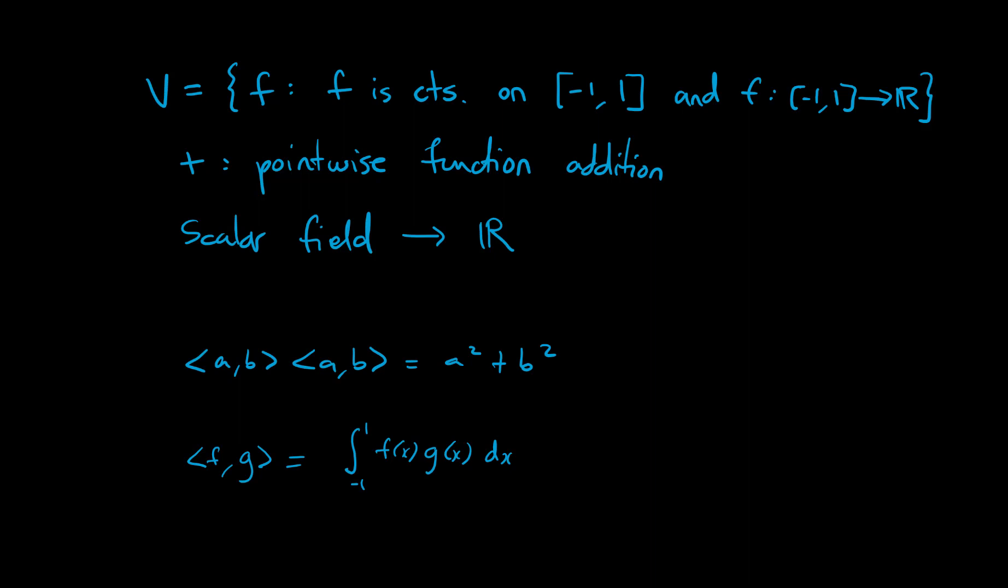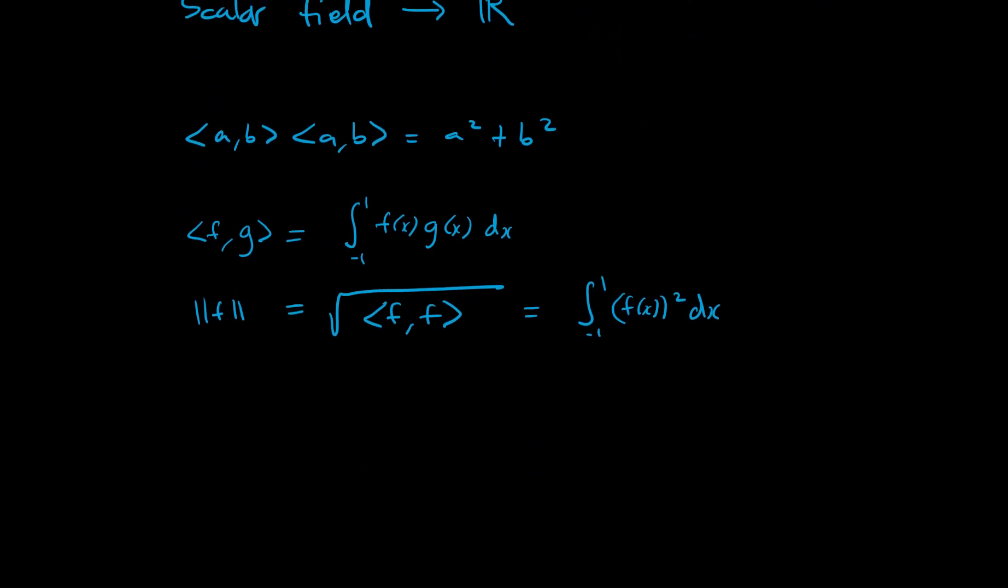Now, if we want this to be a norm to get the length of a vector, we can define the norm of f equals the square root of f with itself in the inner product, which is the integral from -1 to 1 of f(x) squared dx. So with this definition, we can write the formula <f,g> equals ||f|| times ||g|| cosine theta, which would be the angle between f and g. I say angle using air quotes, because we can't actually draw f and g as arrows in any real way in some Euclidean space. But we can treat it that way by defining this inner product and this norm.